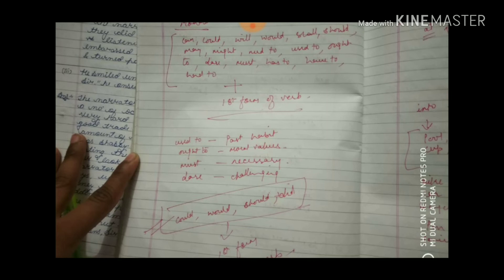The second form is not used with modals. All take the first form of the verb — whether it's Can or Could, first form applies. But in stories, you will use Could, Would, Should, and Did. And with Did — first form of verb is used, not second. 'Used to' is used when you explain a past experience. 'Ought to' is used for moral values — for example: 'He ought to respect the nation,' 'He ought to respect his parents.'